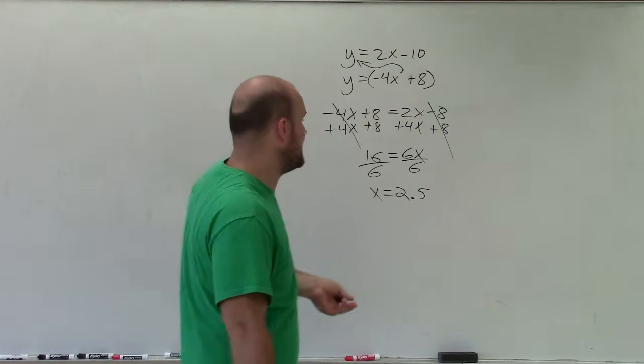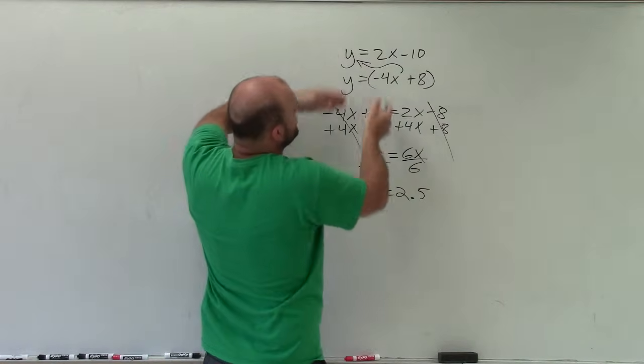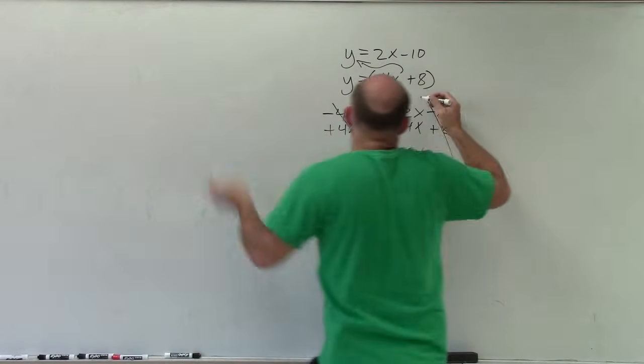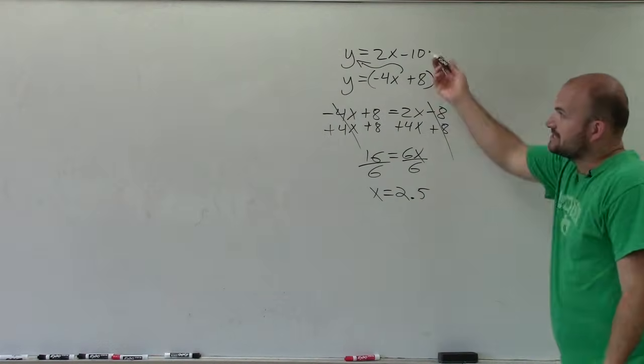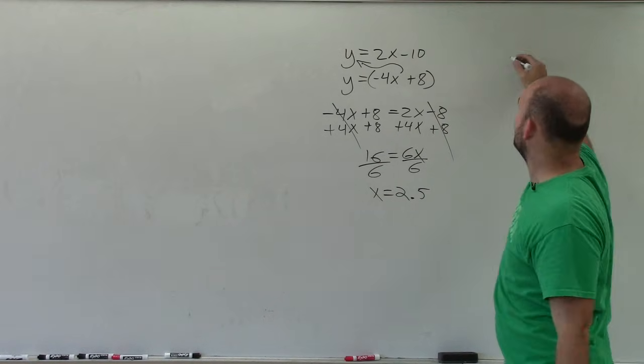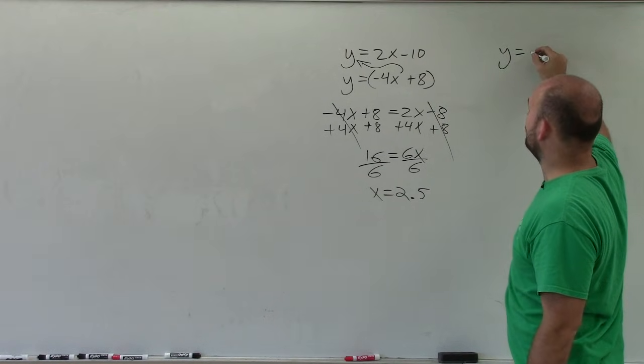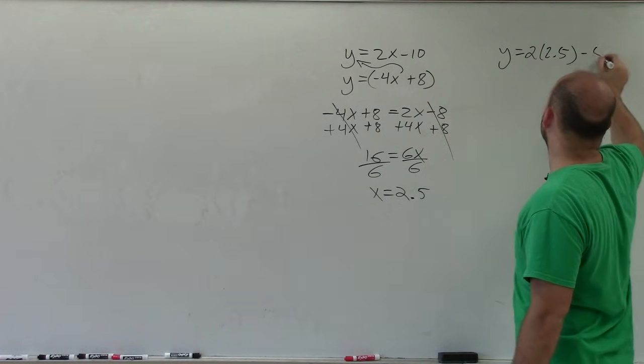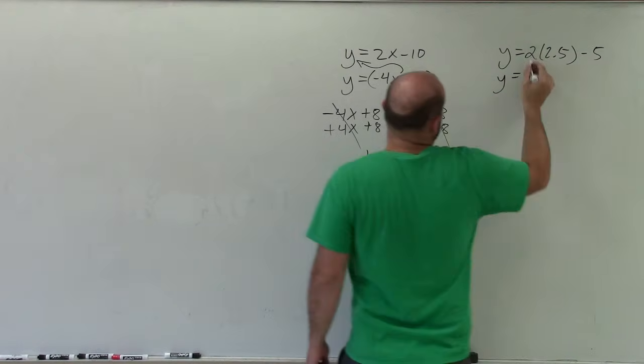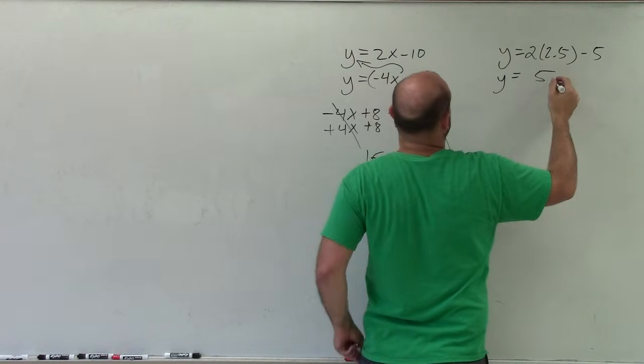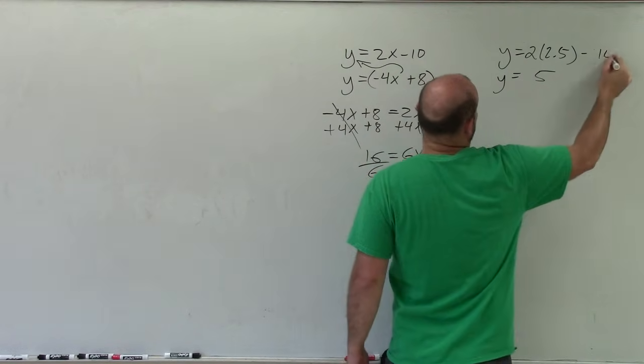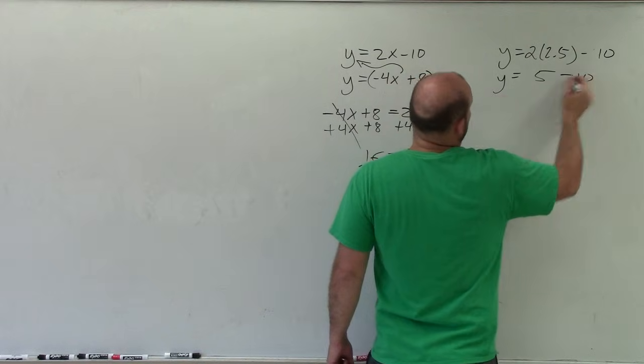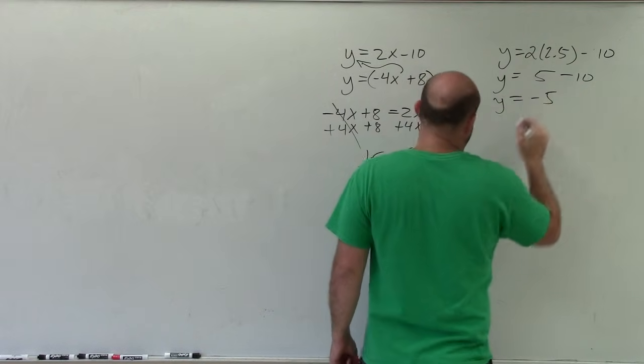Now to solve for y, I just take this value and plug it into one of these equations. It doesn't matter which equation you plug it into, because x is the same. But I think it would probably be easier for this equation. So I do y equals 2 times 2.5 minus 10. y equals 2 times 2.5 is 5. That's minus 10. 5 minus 10, y equals negative 5.